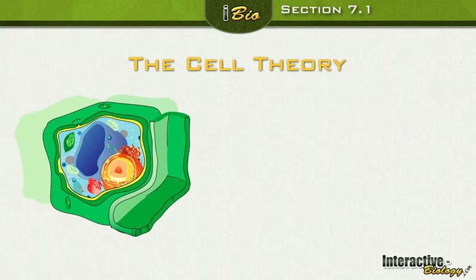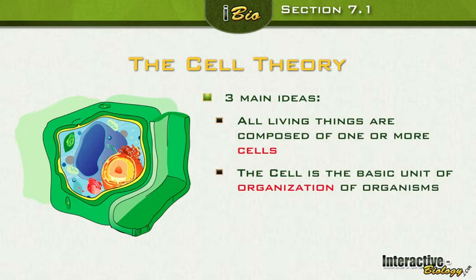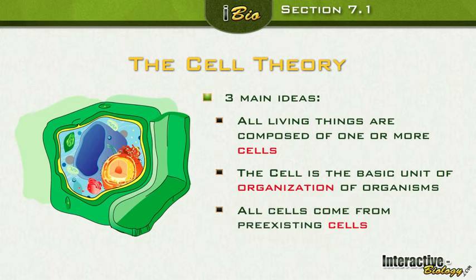Now let's talk about what the cell theory actually is. It's composed of three main ideas. Idea number one: all living things are composed of one or more cells. Idea number two: the cell is the basic unit of organization of organisms. And the third idea: all cells come from pre-existing cells.